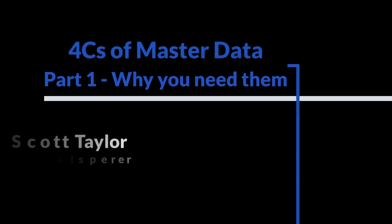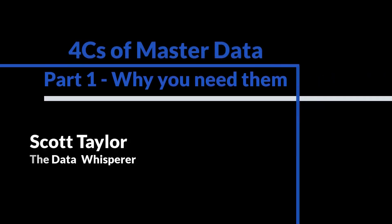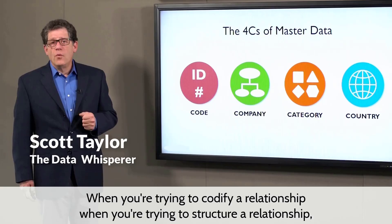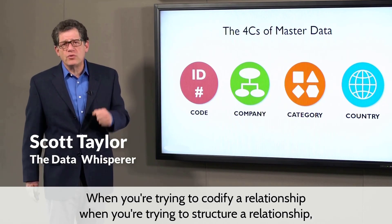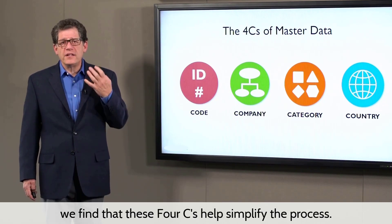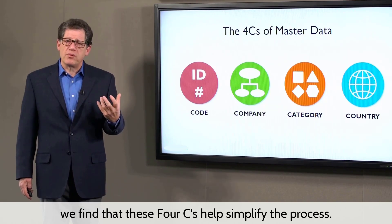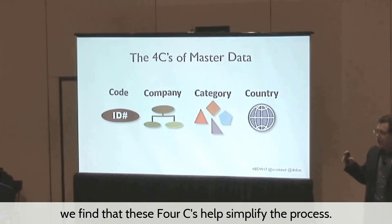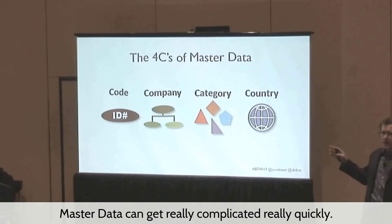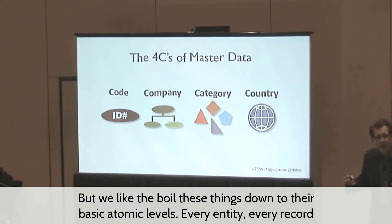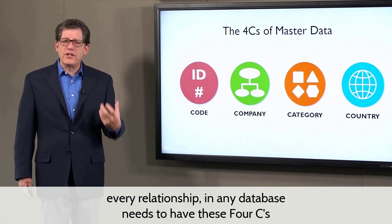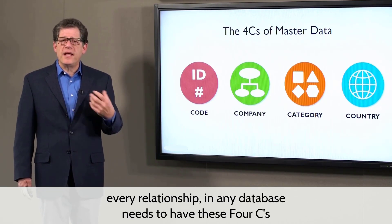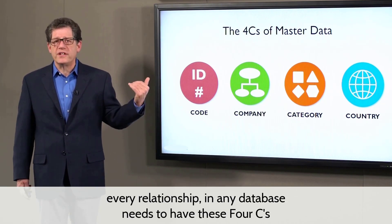You can boil down the core master data about things to its atomic elements. When you're trying to codify a relationship, when you're trying to structure a relationship, we find that these four C's help simplify the process. Master data can get really complicated really quickly, but we like to boil these things down to their basic atomic levels. Every entity, every record, every relationship in any database needs to have these four C's.